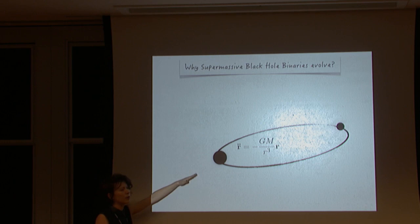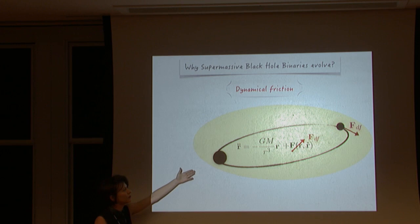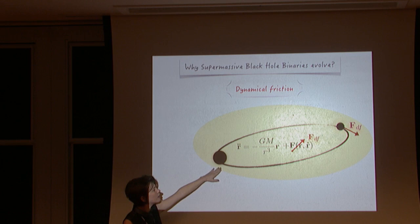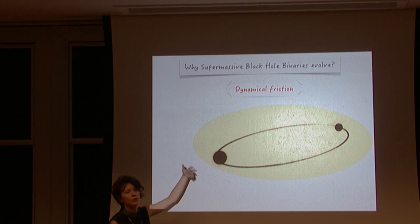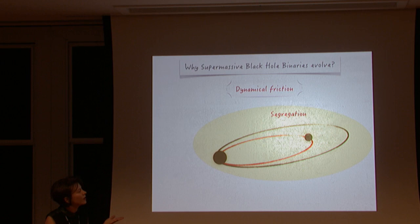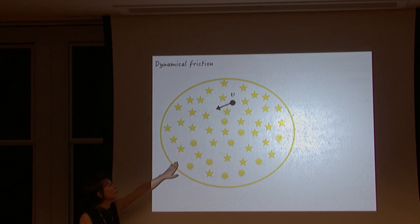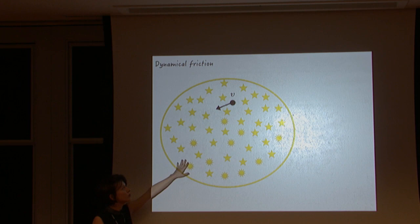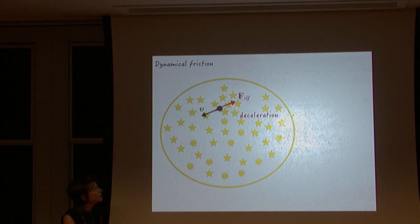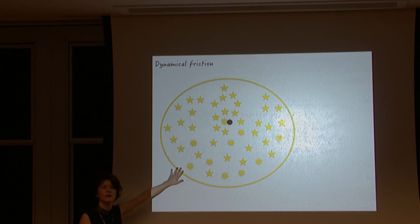To understand this, I want to briefly explain why we expect the binary to evolve. If isolated, we'd have a perfect Keplerian elliptical orbit. But this binary is embedded inside a stellar cluster. Dynamical friction acts as a perturbing force on the classic two-body problem, perturbing the orbit of the outer black hole and making it segregate towards the center. This force was described by Chandrasekhar.